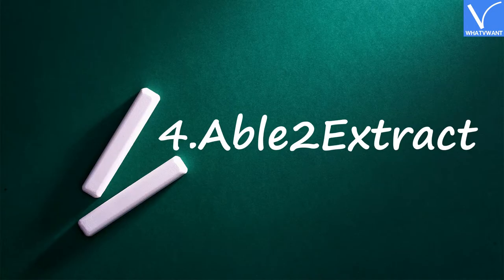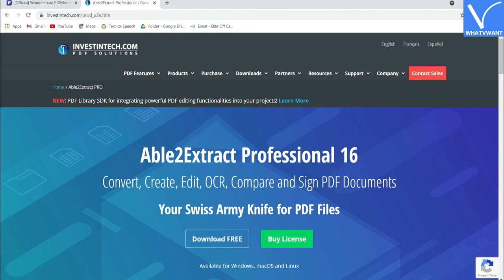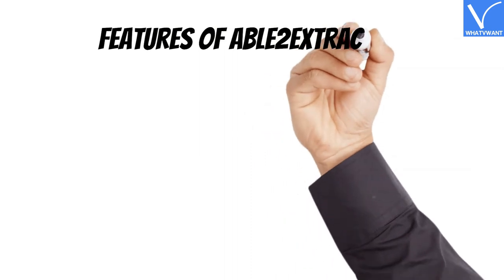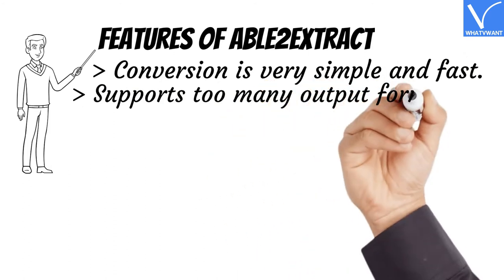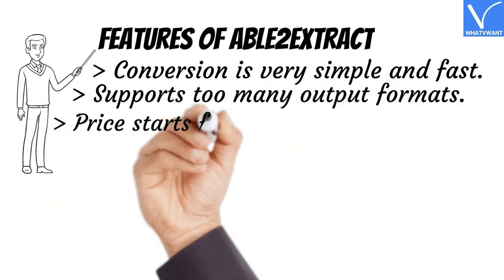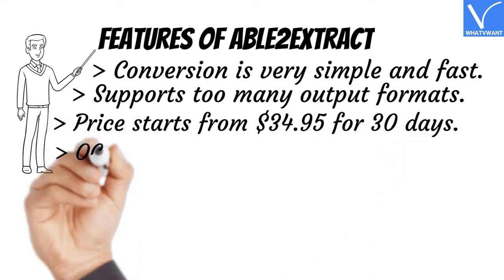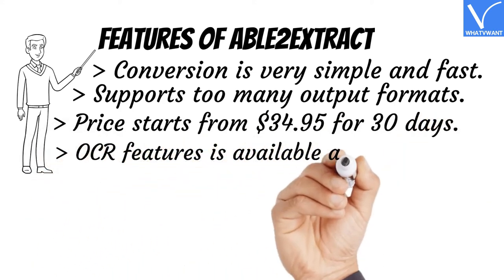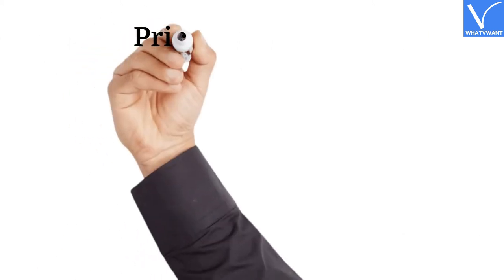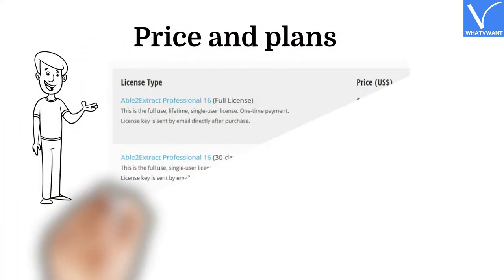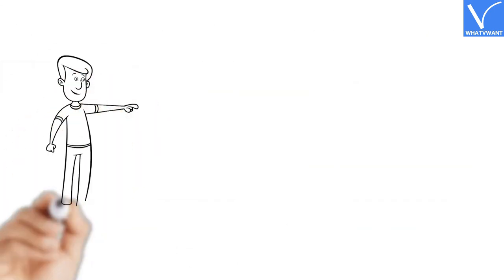Number 4: Able2Extract. Able2Extract Professional is another easy-to-use PDF editor software from Investintech Inc. It gives all the features that you get from other software. Features: conversion is very simple and fast; supports many output formats; price starts from $34.95 for 30 days; OCR feature is available at higher cost; offers 7 days free trial with complete features. The price and plans of Able2Extract Professional are exhibiting on the screen. Check the description for the link.